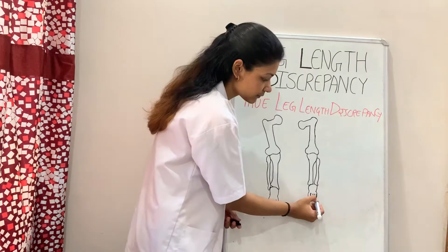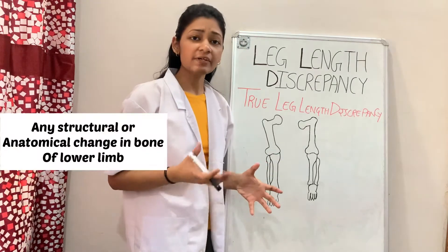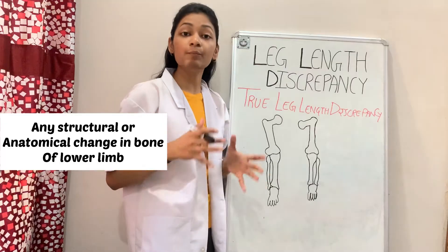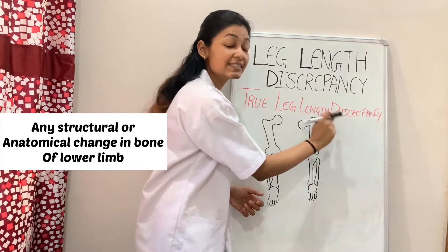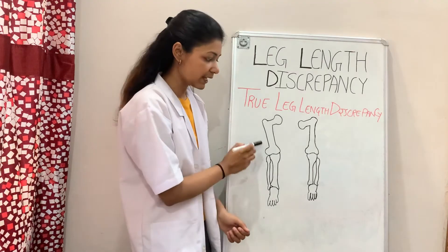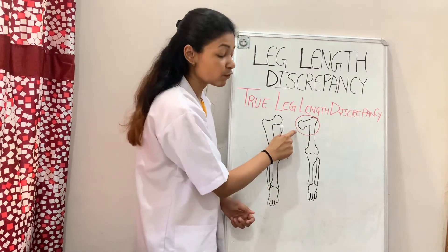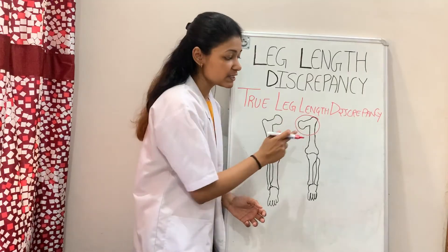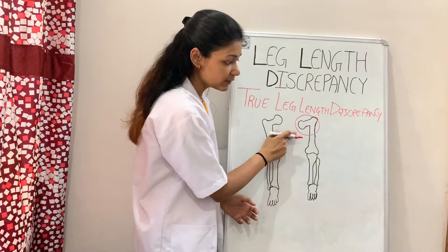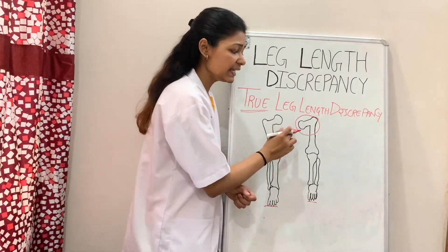First I will tell you about true leg length discrepancy, and I will also tell you how to measure both types. True leg length discrepancy occurs whenever there is any anatomical or structural change in the bony component of the lower limb. For example, in this diagram, this is a normal leg, and in this leg there is coxa vara. Due to coxa vara, which is a type of structural change in the bony structure of the femur, there is leg length discrepancy.